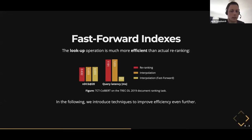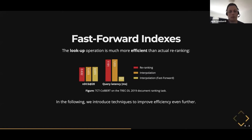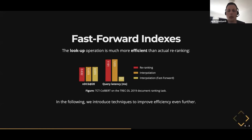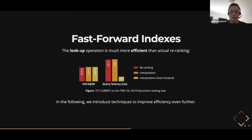To give you an idea of how much faster this can be, we have a comparison of three approaches: normal re-ranking, re-ranking with interpolation, and interpolation-based re-ranking using our fast forward indexes lookup technique. The performance is almost the same for all three, but if you look at the average latency per query, our approach is actually much faster. In the remainder of this talk, I'll introduce two techniques for interpolation-based re-ranking using these fast forward lookup indexes, which make this even more efficient.